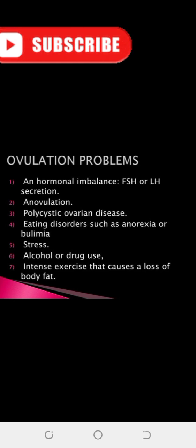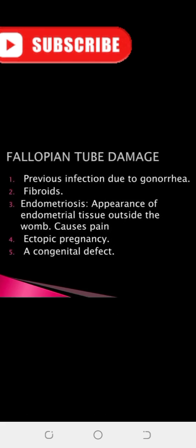Eating disorders such as anorexia nervosa or bulimia nervosa may also lead to infertility. Severe stress may lead to hormonal imbalance and ovulation problems, as can intensive exercise causing loss of body fat. Fallopian tube damage can occur from previous infection due to gonorrhea, fibroids — extra growth in the uterus — and endometriosis, which is inflammation of the endometrium with endometrial tissue appearing outside the uterus, causing pain.